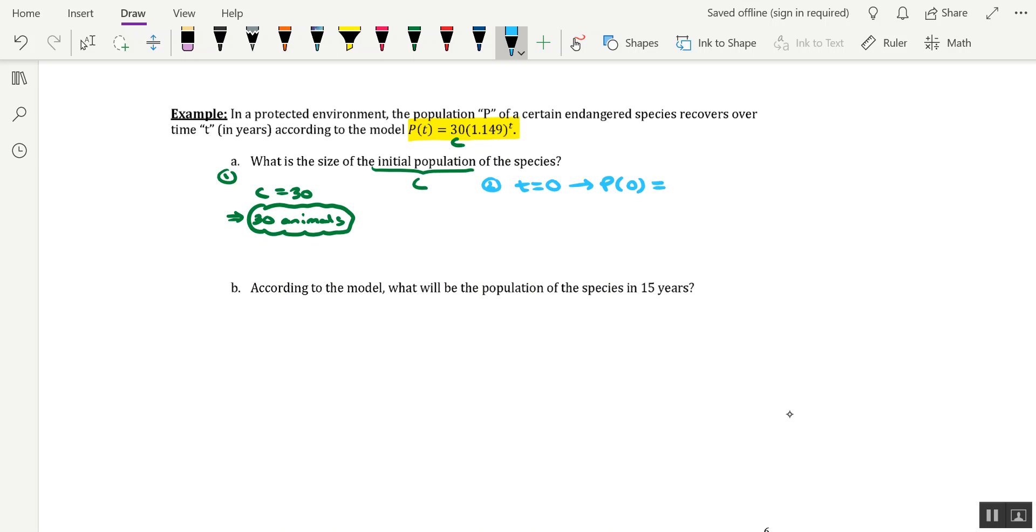We do P of 0 equals 30 times 1.149 raised to the power of 0. And basically follow your order of operations here, where we would have to do the power first, or the exponent. So we'd have to figure out what 1.149 to the power of 0 is. And of course, we know that that's equal to 1. So this winds up being 30 times the number 1, which still leaves us with 30, and that would be 30 animals.